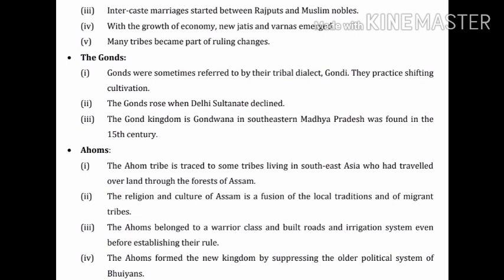The next and last topic of this chapter is the Ahom. Point one: the Ahom tribe is traced to some tribes living in Southeast Asia who had travelled overland through the forests of Assam. Point two: the religion and culture of Assam is a fusion of local traditions and of migrant tribes. Point three: the Ahom belonged to a warrior class and built roads and irrigation systems even before establishing their rule.